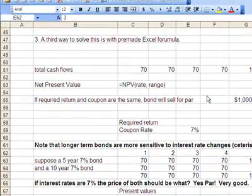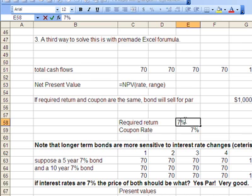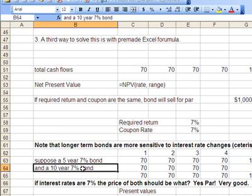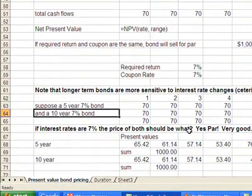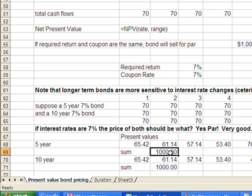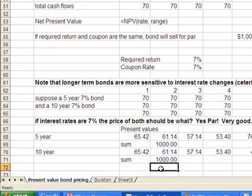In our previous video, we showed that when the coupon rate and the required return are the same, the bond will sell for par. For example, let's suppose the market required rate of return is 7%. We have two bonds, a 5-year bond and a 10-year bond, both with 7% coupon payments. You see the price of the bond, this sum is the price of the bond, is $1,000 in each case.